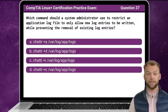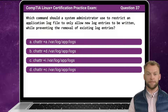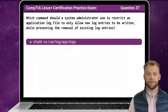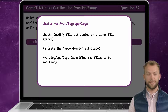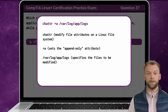Question 37. Which command should a system administrator use to restrict an application log file to only allow new log entries to be written while preventing the removal of existing log entries? The answer is A. The change attribute command is used in Linux to modify file attributes. The plus A option sets the append-only attribute for the specified file. When this attribute is set, the file can only be opened for writing in append mode, meaning new data can be added to the end of the file, but existing data cannot be modified or deleted.